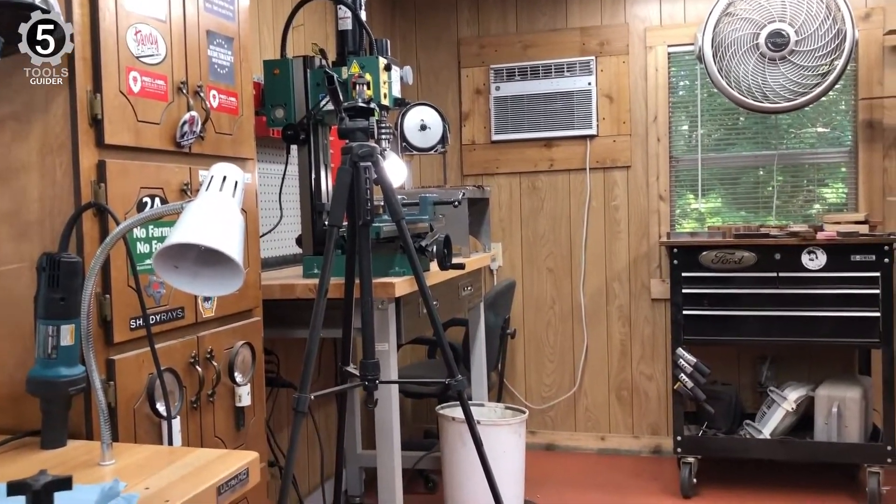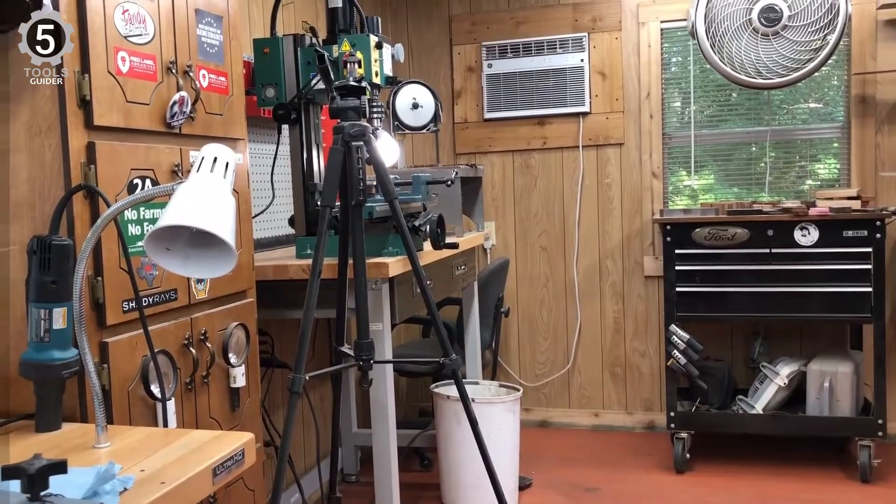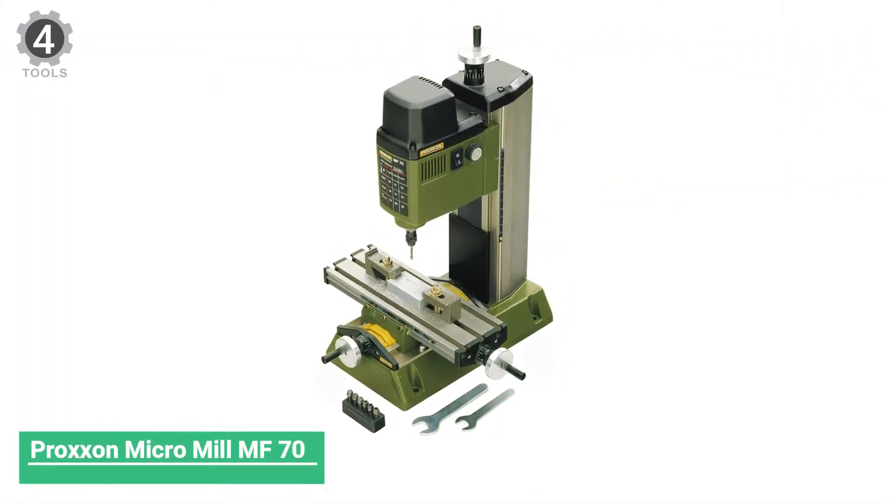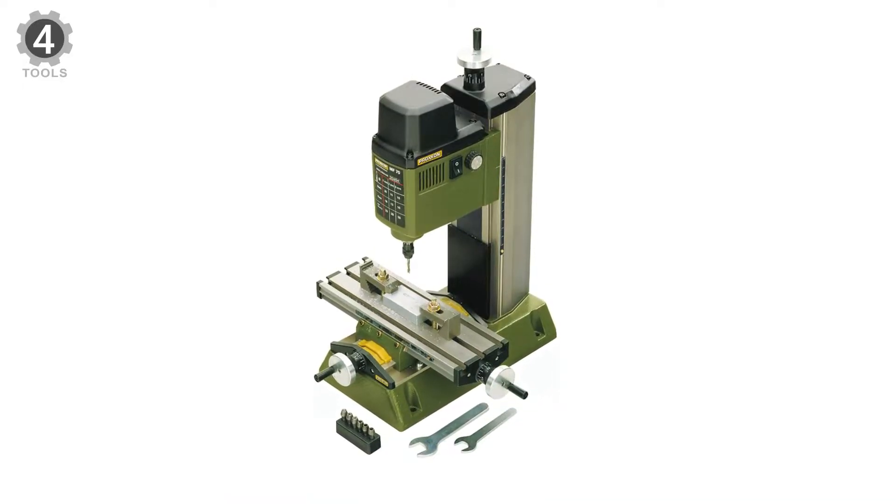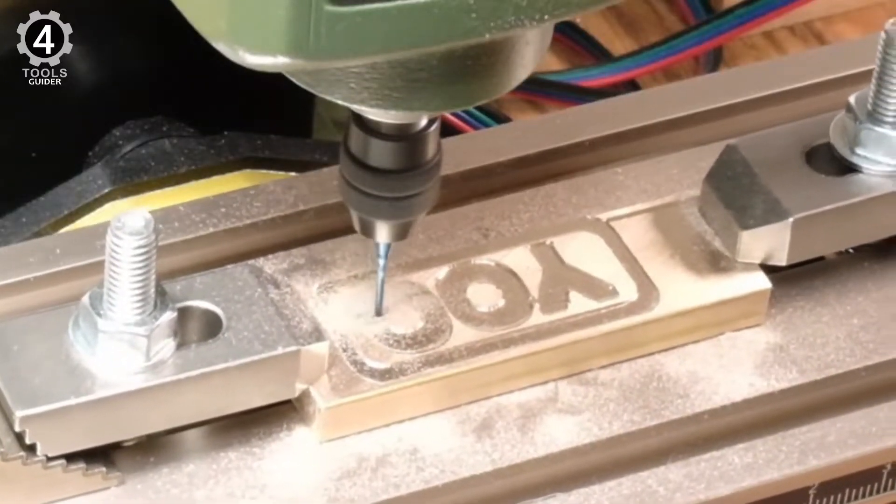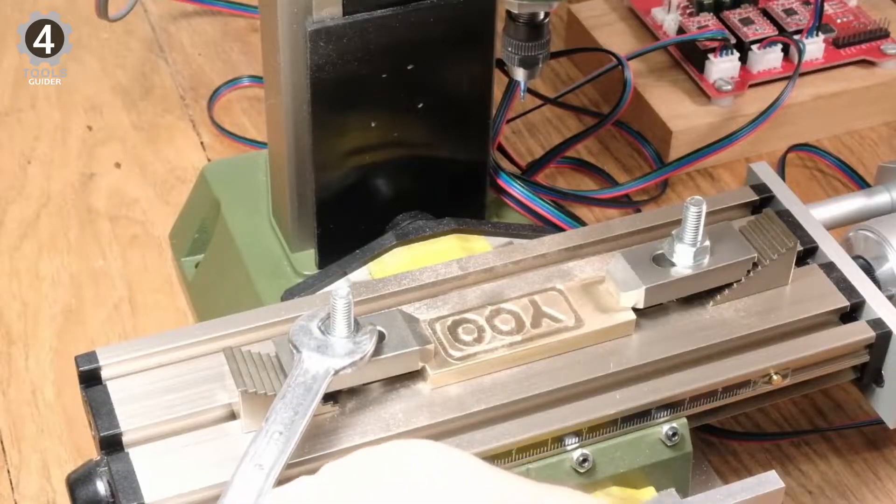A mini milling machine has more features than some mill and is affordable for everyone. Number 4. Proxen Micro Mill MF70. If you plan to use a milling machine for jewelry, optics, electronics, model making, or other precision projects, this Proxen Micro Mill MF70 is for you.